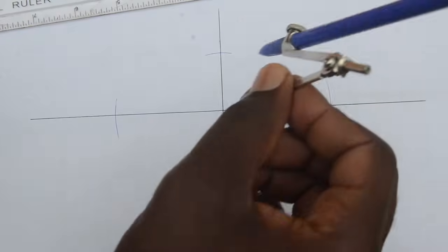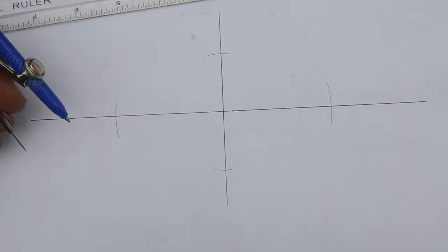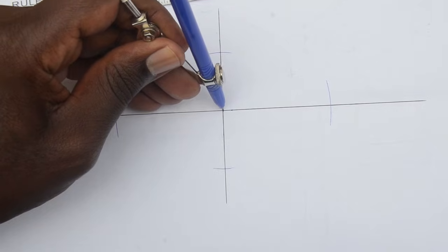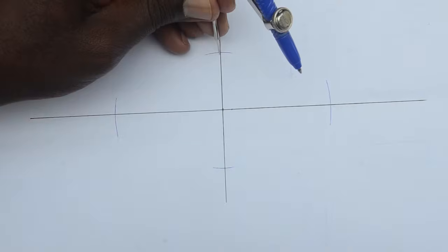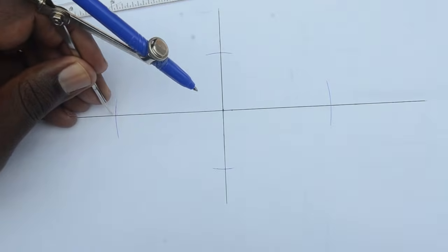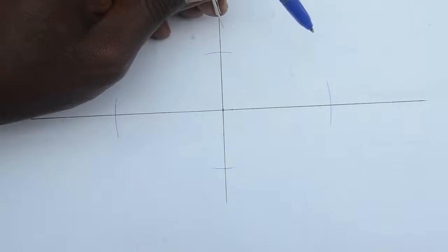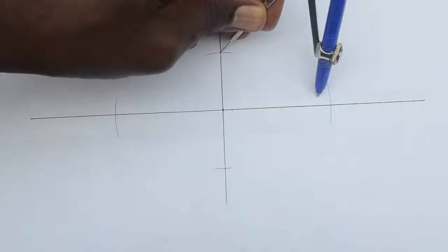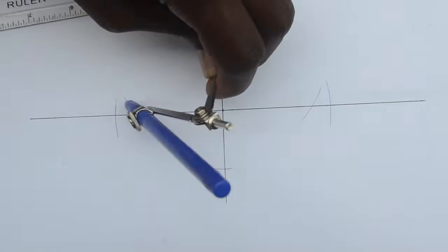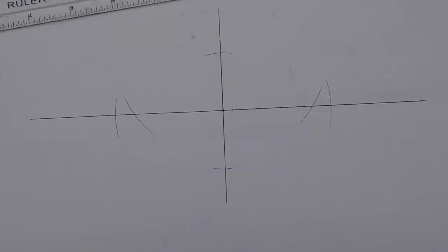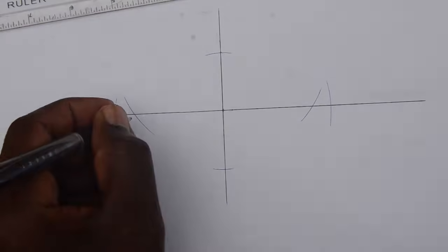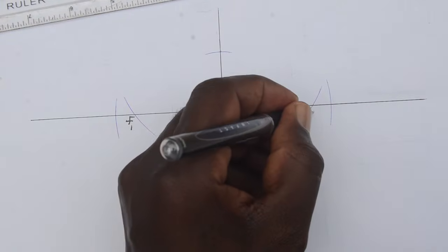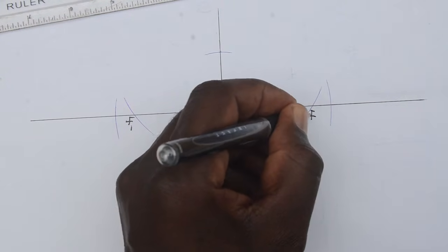We then determine the focal points of the ellipse. This is done by using a compass and measuring half of the distance of the major axis. Use the distance obtained and step on either the top part or the lower part of the minor axis. Mark the distance along the line of the major axis on either side. This will give you the focal points, and I will name them f1 and f2.